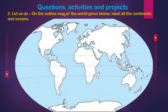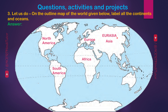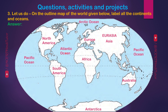Question 3: On the outline map of the world given below, label all the continents and oceans. Answer — Continents: 1. North America, 2. South America, 3. Africa, 4. Europe, 5. Asia (Europe and Asia collectively called Eurasia), 6. Australia, 7. Antarctica. Oceans: 1. Pacific Ocean, 2. Arctic Ocean, 3. Atlantic Ocean, 4. Southern Ocean, 5. Indian Ocean.